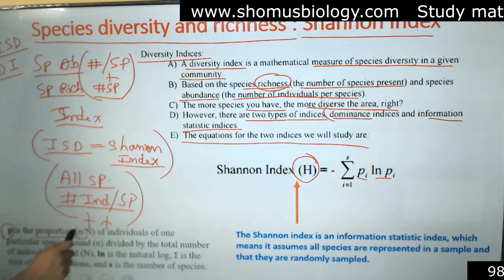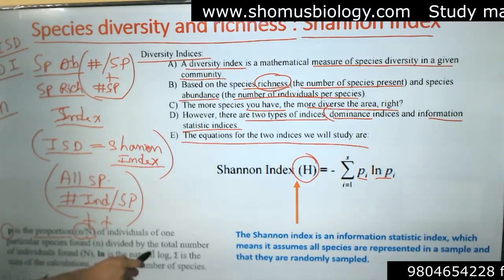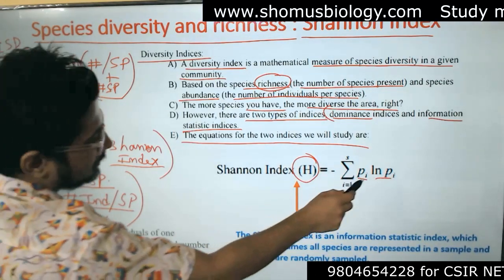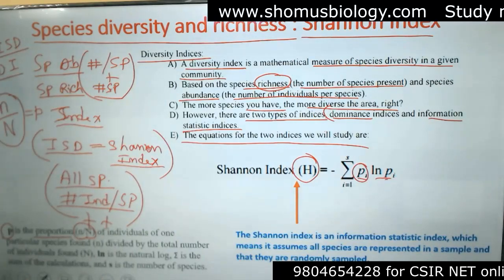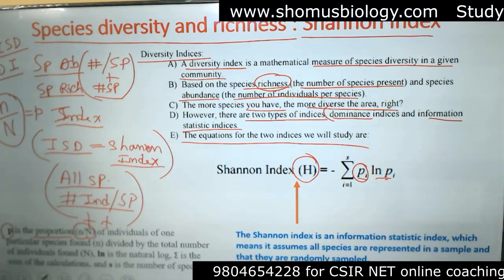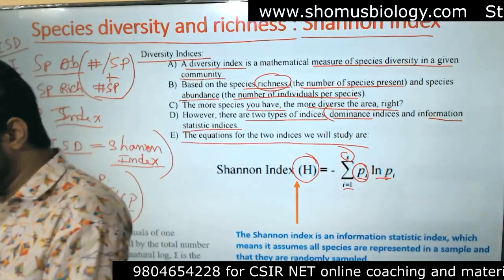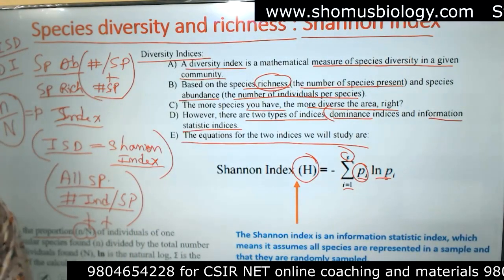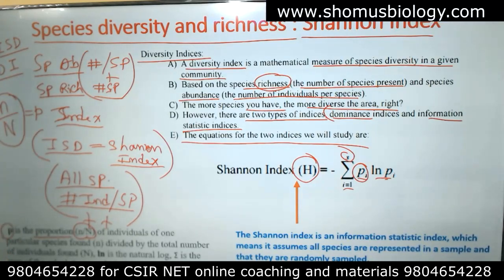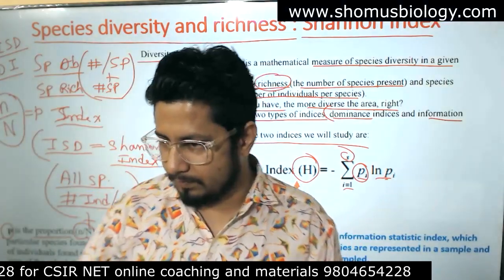In the Shannon formula, P is a proportion — it is small n divided by capital N, where small n is the number of individuals of one particular species and capital N is the total number of individuals present. S is the number of species present. Both species richness and species abundance are accounted for in the Shannon index.